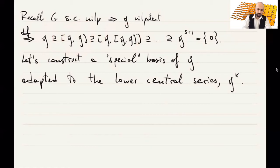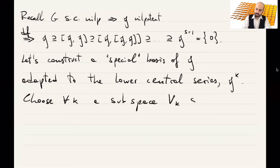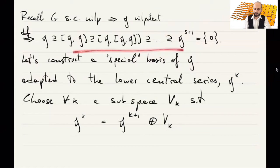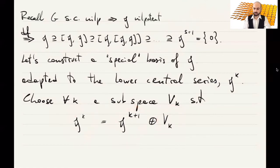So what do we do? We choose, for each k, a subspace Vₖ that is a direct complement of Gₖ₊₁ inside Gₖ. It's easy to see that all these inclusions are strict until we reach the first Gₛ that is nonzero, and then the next one is zero. So we can choose such a subspace for k between 1 and s.